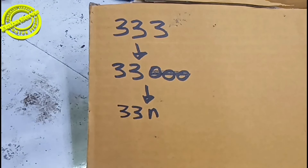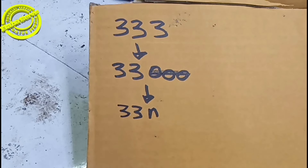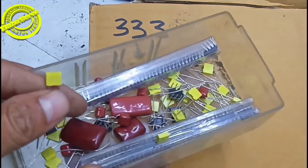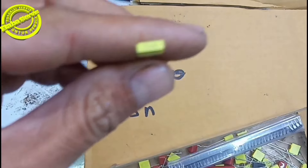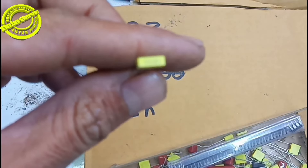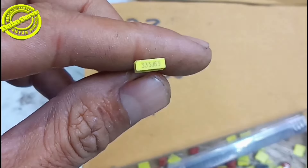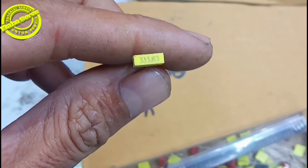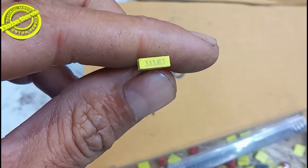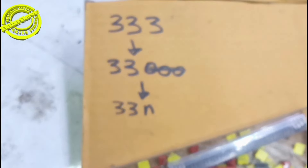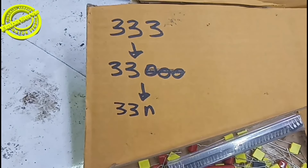Nih teman-teman, banyak bermacam-macam milar. Saya fokuskan ke kode '333'. Ini adalah 33 Nano — karena '333' yang kita bahas di sini. Kita akan ukur apakah ini benar 33 Nano.